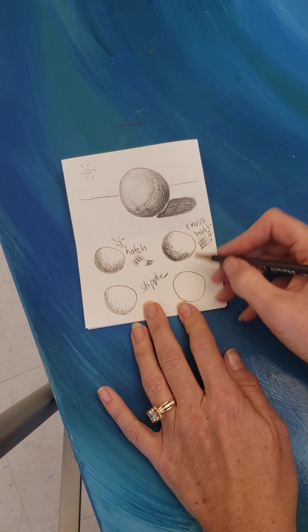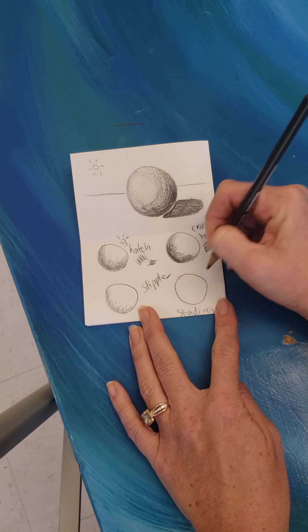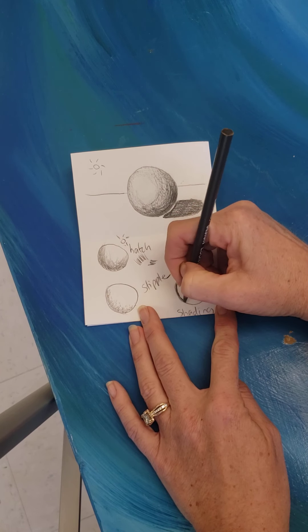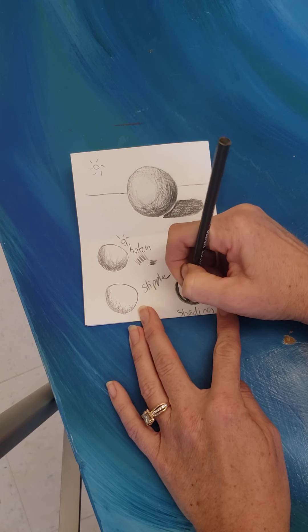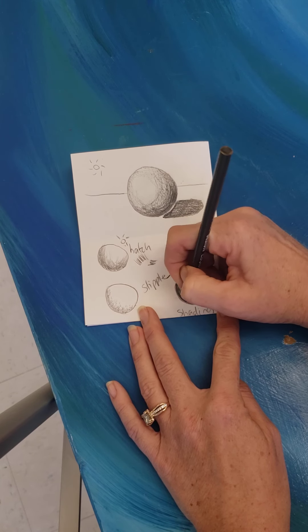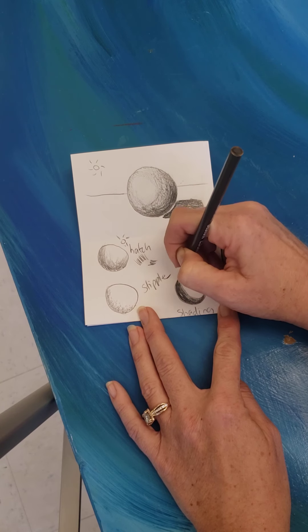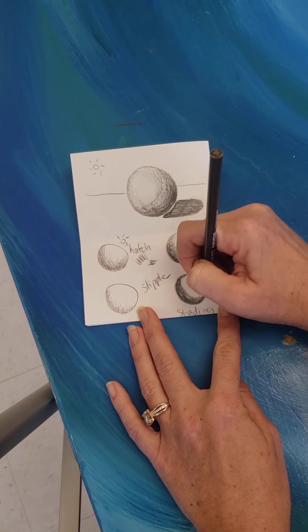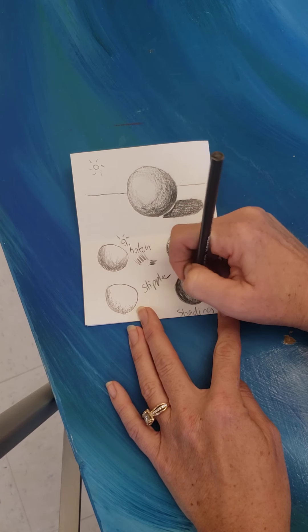And then the last one is what we did yesterday where you just shade using light, medium, and dark. So today I want you to practice these four techniques because I will ask you to use them in your sketchbook in the next few weeks for different assignments. And so I want you to be able to know which ones which and how you use it and which ones you like using the best.